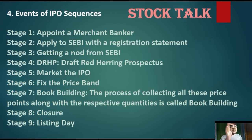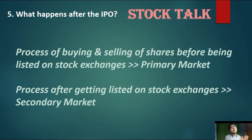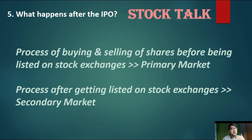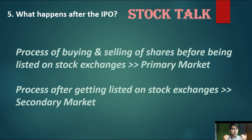The next question: what is the primary market and what is the secondary market? Simply, before a stock is listed — when it first comes to market through the IPO — that is the primary market. Once the stock is listed on the stock exchange and publicly available for trading day by day, that is the secondary market. So IPO is primary market; trading after listing is secondary market.